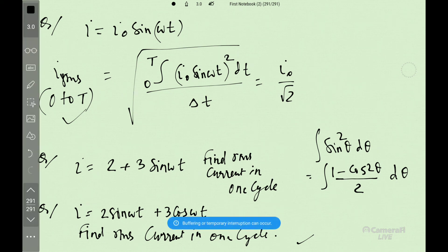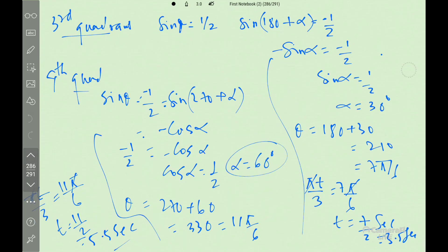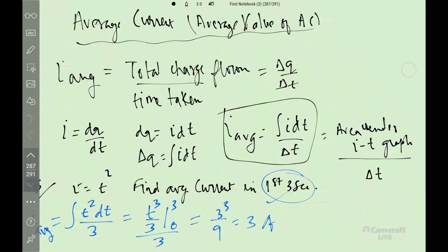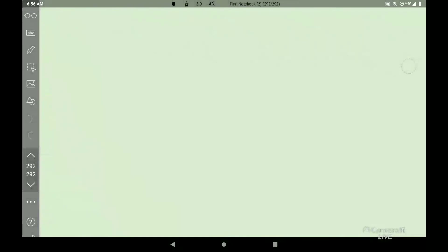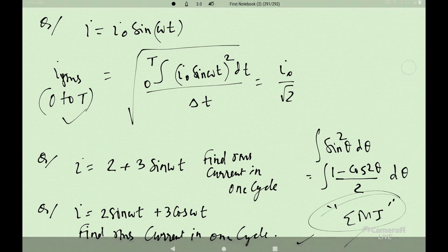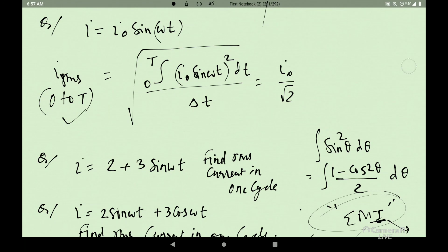So what we have studied today: average and RMS values of alternating current. I will post the questions in the DPP — average current and RMS questions in the masterclass. We also have to do EMI DPP. I will post 4 to 5 questions on average current and RMS. That is all for today. Thank you. Any doubts, please ask.